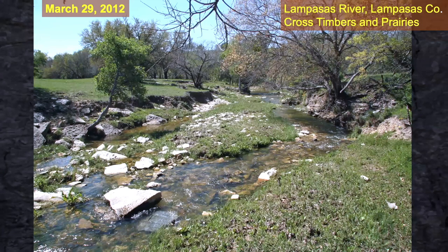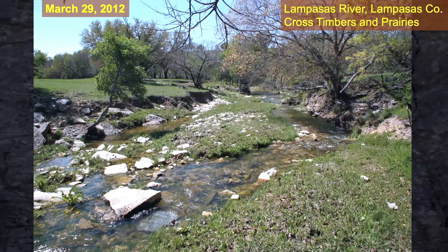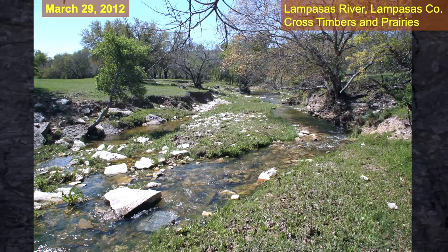Here's a creek — the headwaters of the Lampasas River in Lampasas County. This property was owned by a widow; her husband had passed away about 20 years earlier. It had been leased out for 20 years and had been overgrazed for about 140 years — sheep, goats, cattle, and native white-tailed deer. Look at the grazing; it's uniformly short. This bank right here is sloughing.